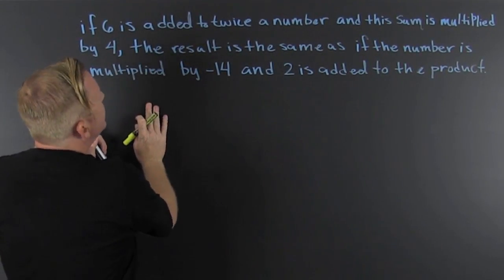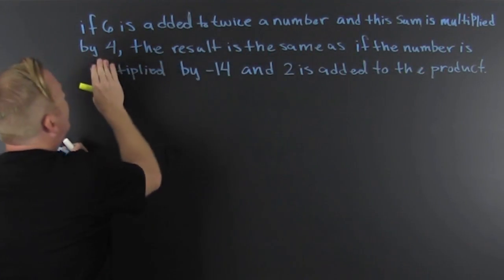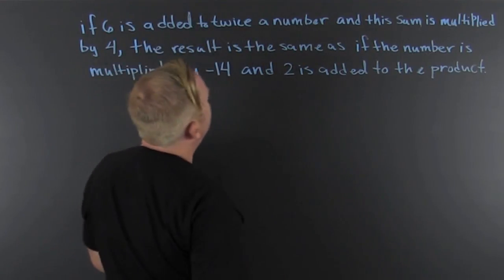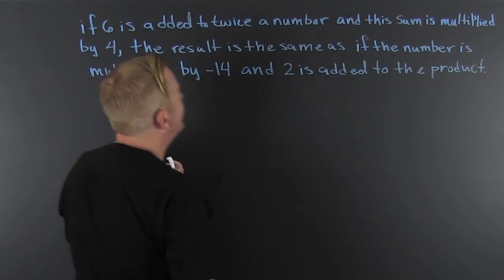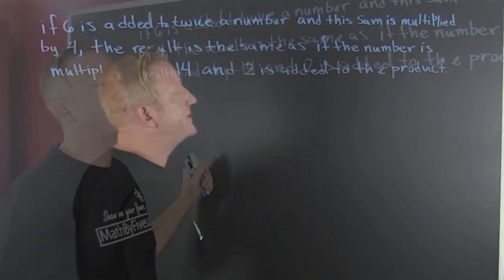If six is added to twice a number and this sum is multiplied by four, the result is the same as if the number is multiplied by minus 14 and two is added to the product.